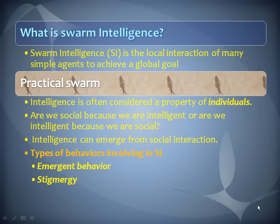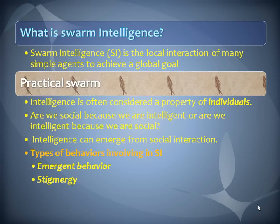Now let's see what swarm intelligence is. Simply, swarm intelligence is the local interaction of many simple agents to achieve a global goal. We know that intelligence is often considered a property of individuals, so the question arises: are we social because we are intelligent, or vice versa?